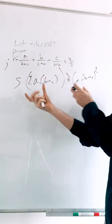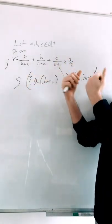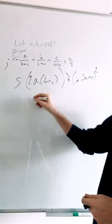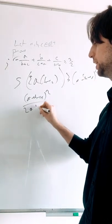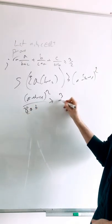So what is enough for us to prove is that this thing that S is greater than or equal to is in fact greater than or equal to 3 over 2. What is this thing? Well, this thing is A plus B plus C squared over 2 times AB cyclically. This needs to be greater than or equal to 3 over 2.